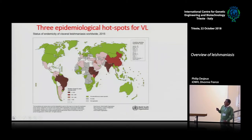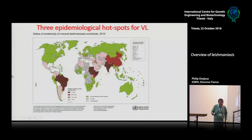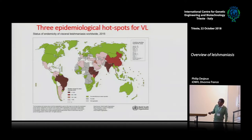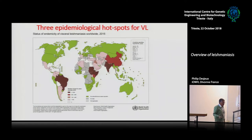In the next slide you will see a great change. Previously the major focus for VL was the Indian subcontinent. Thanks to the Kala-azar Elimination Programme, it's going down quickly. At the contrary, in Africa the situation is worsening. Somalia is now one of the six major countries reporting VL. In the past it was Nepal and Bangladesh, but Nepal and Bangladesh have now reached the target of the Elimination Programme.